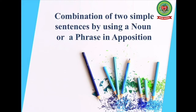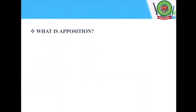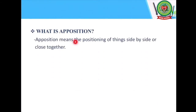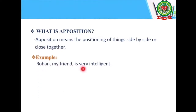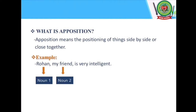Let us learn to combine two simple sentences by using a noun or a phrase in apposition. What is apposition? Apposition means the positioning of things side by side or close together. Example: 'Rohan, my friend, is very intelligent.' There are two nouns — Rohan and my friend — but they refer to the same person. Here, 'my friend' gives additional information about Rohan. The additional information that describes the first noun is called apposition, so 'my friend' is used in apposition with the noun Rohan.